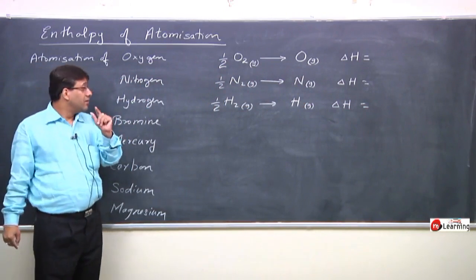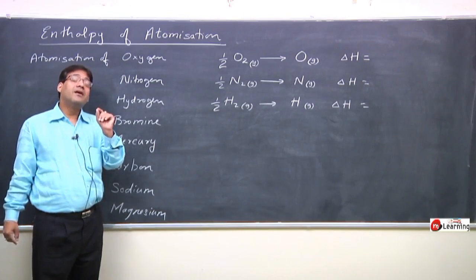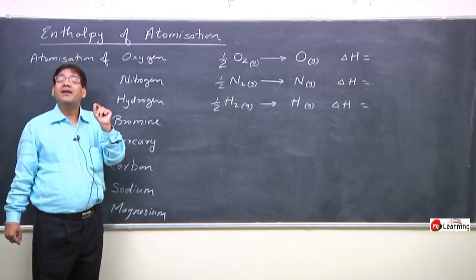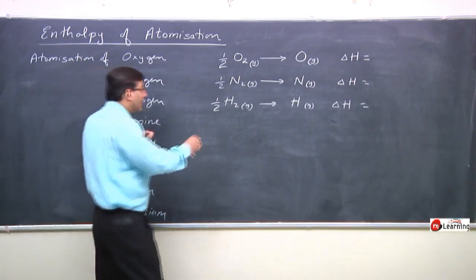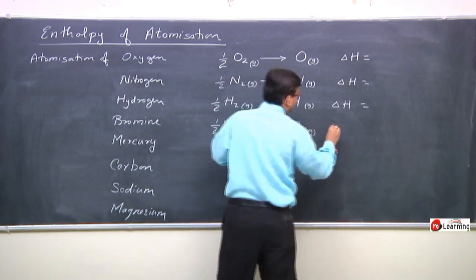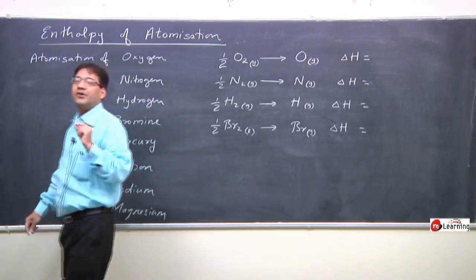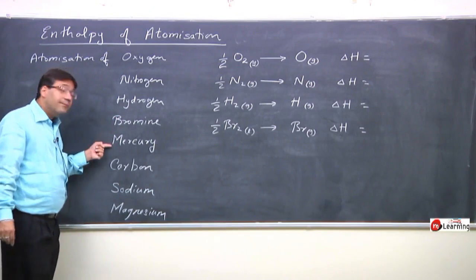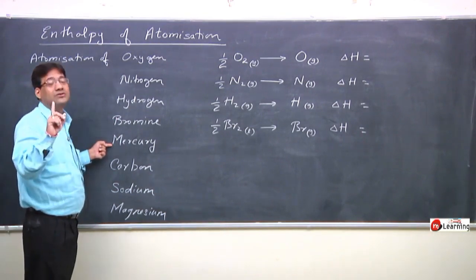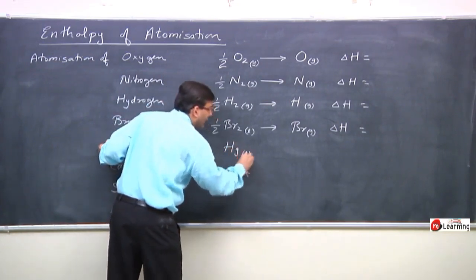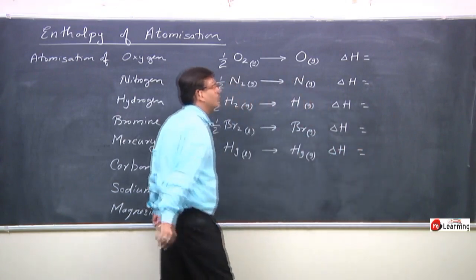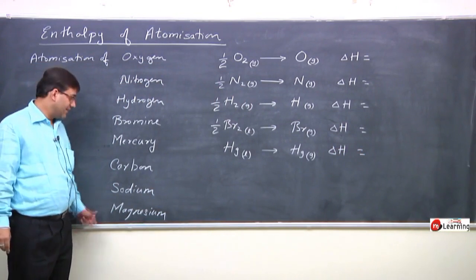For bromine: in its pure and stable condition, Br2 is in liquid state at standard state. So half Br2(l) gives Br(g) — this is enthalpy of atomization of bromine. For mercury: mercury is also in liquid state at room temperature under standard conditions. So Hg(l) gives Hg(g) — the enthalpy of this reaction is called enthalpy of atomization of mercury.